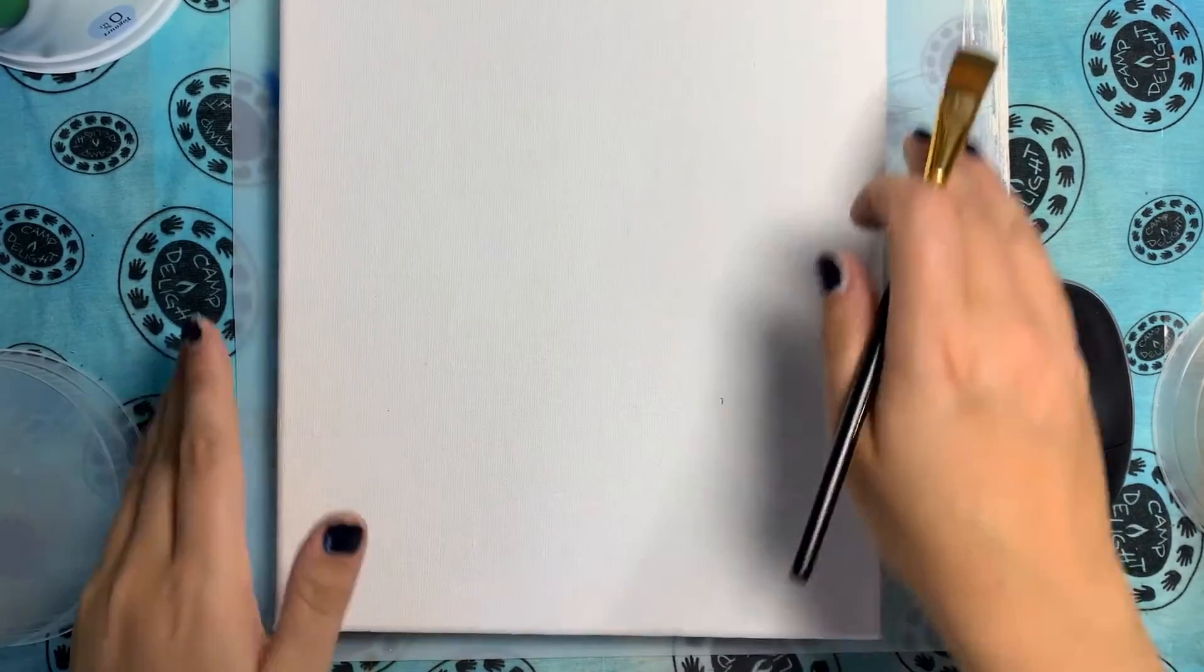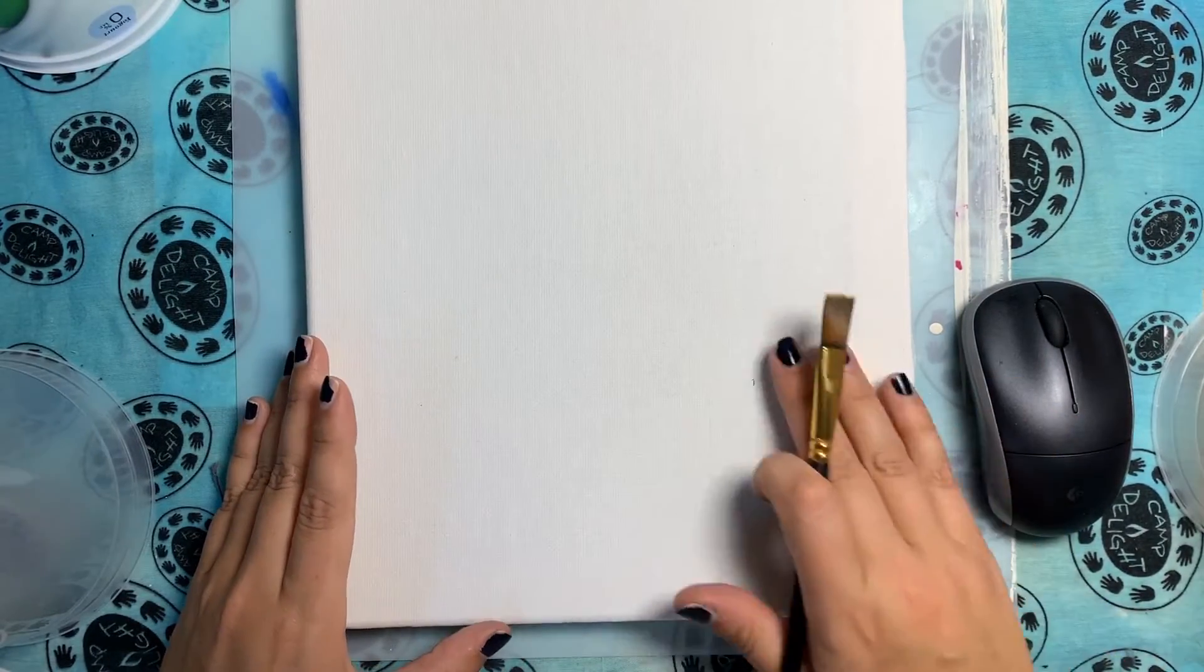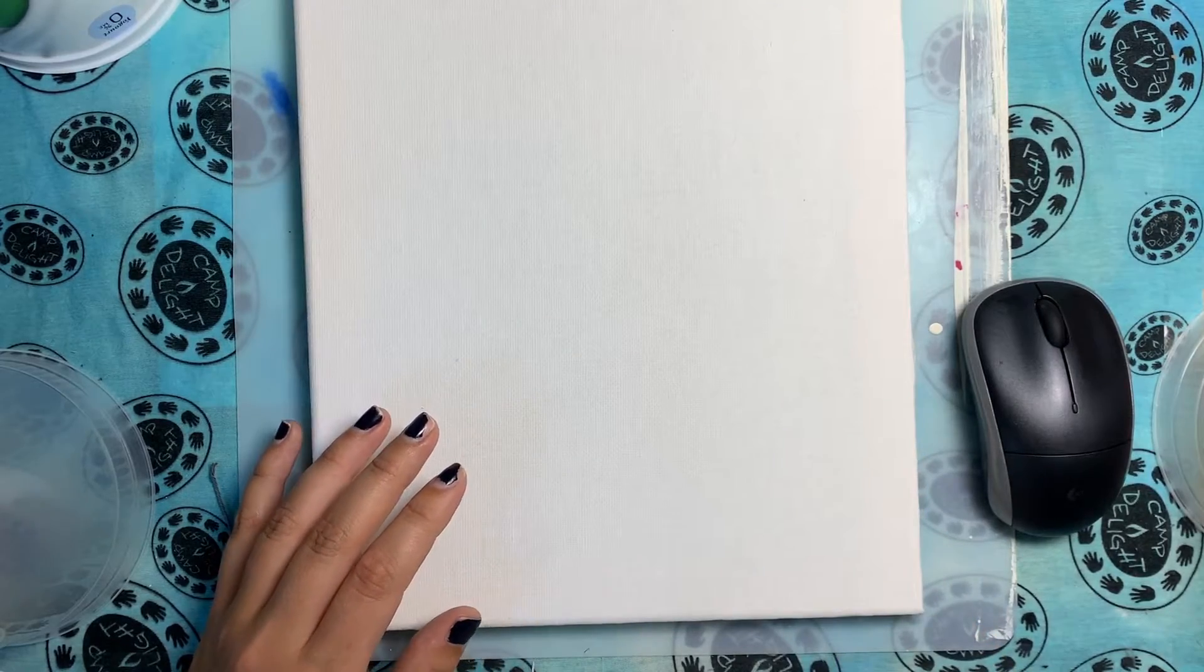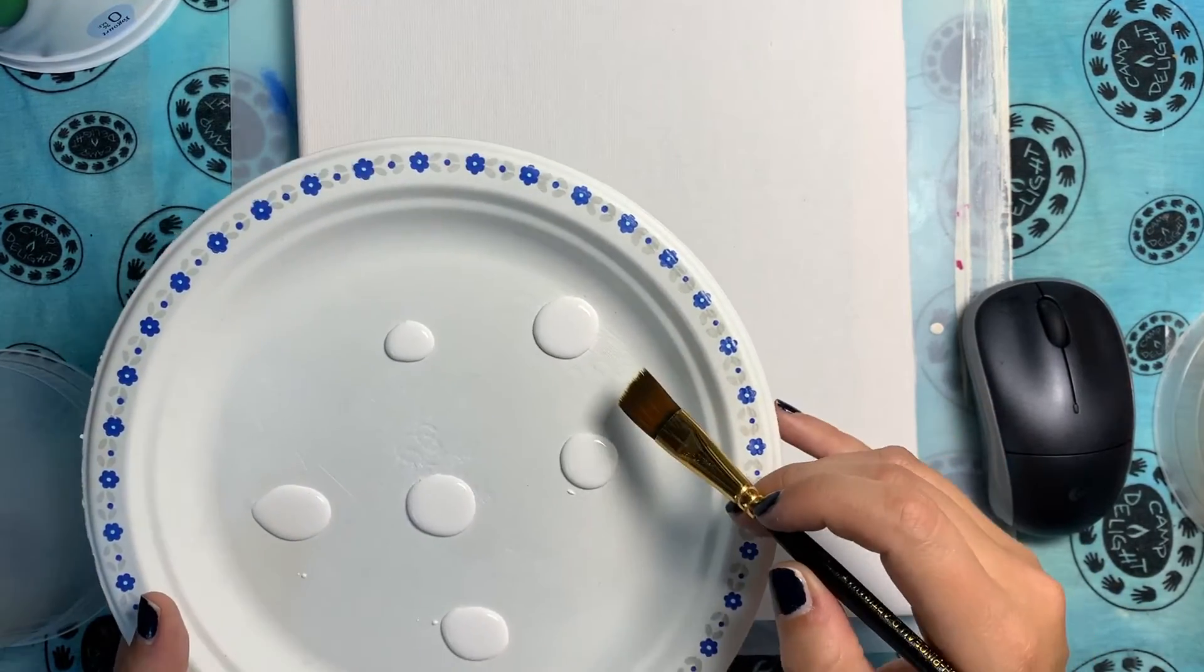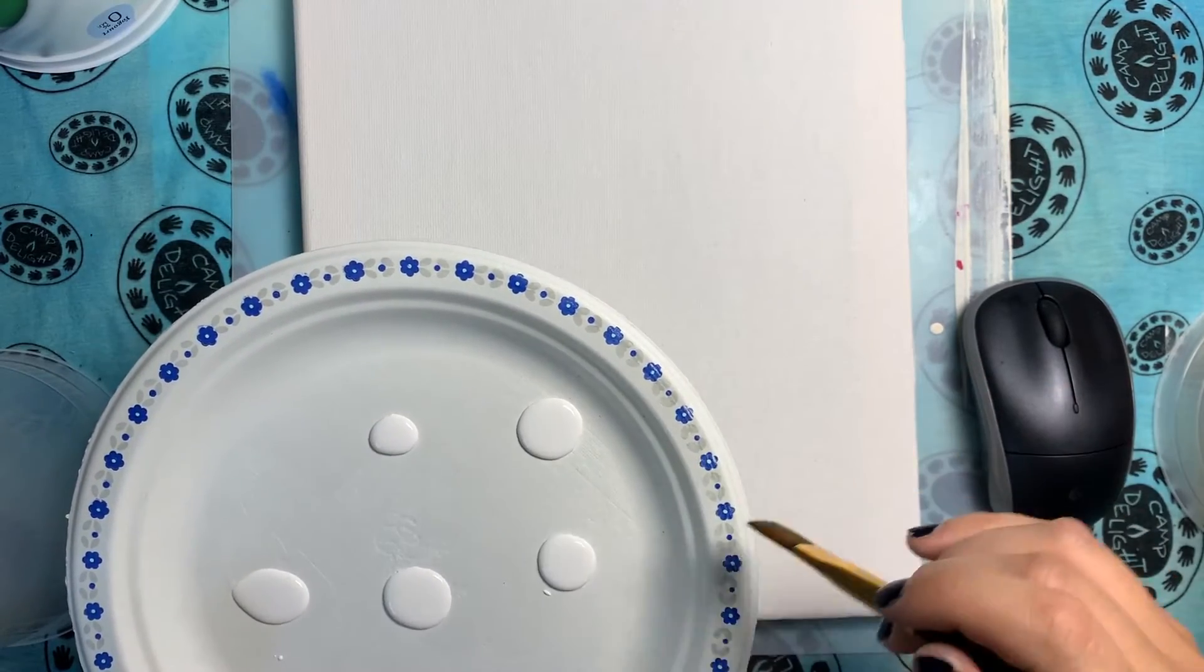Okay, so once your workspace is protected, we are going to start our painting. So we're going to grab our shades of white paint, and we're going to spread the paint across the canvas.